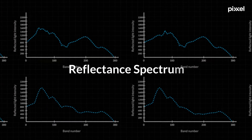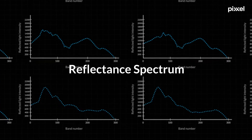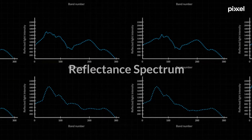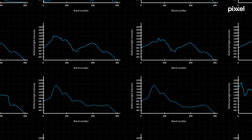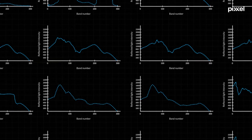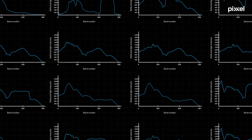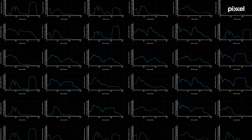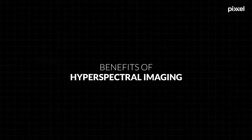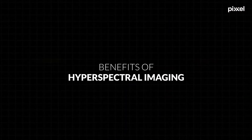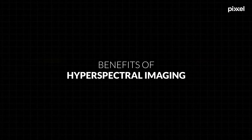Each pixel in a hyperspectral image contains a spectrum of information, revealing the unique fingerprint of the materials or objects within the scene. It can also be called a reflectance spectrum, and by analyzing these spectral signatures, scientists can discern subtle differences that elude our naked eye, unlocking a wealth of information about our environment.